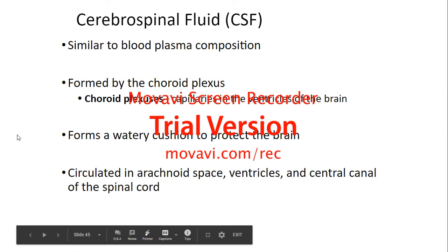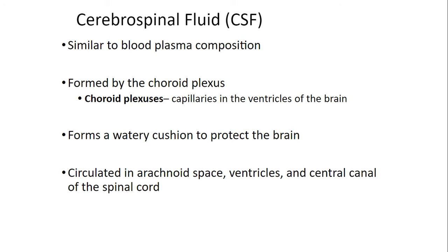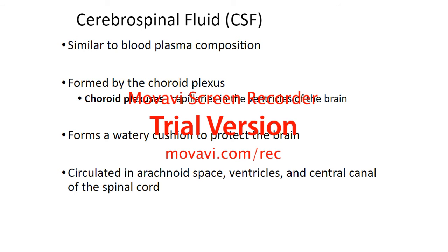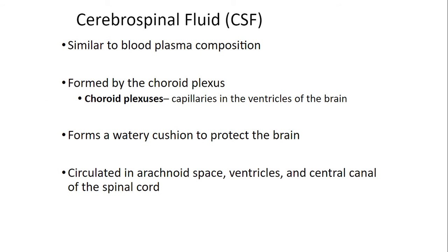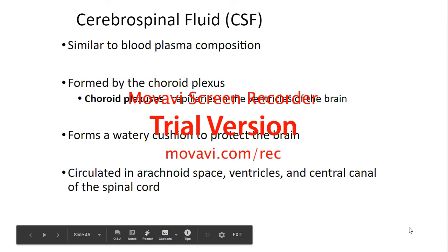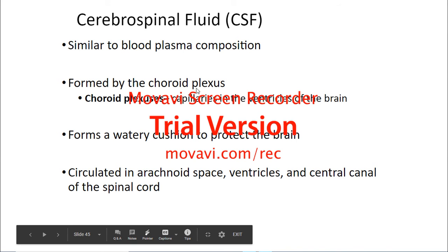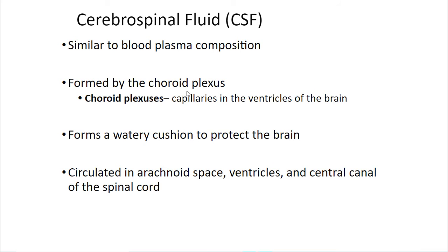Cerebrospinal fluid has a similar composition to blood plasma. It is formed by the choroid plexus — specialized ependymal cells, which are capillaries in the ventricles of the brain. It forms a watery cushion to protect the brain and circulates in the arachnoid space, ventricles, and central canal of the spinal cord. The cerebrospinal fluid is formed as plasma is filtered from the blood through the epithelial cells of the choroid plexus.